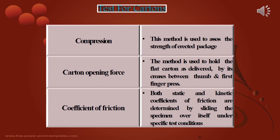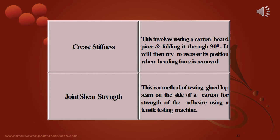Tests for cotton include a compression test to assess the strength of an erected package, and a cotton opening force test where flat cotton is held by its creases between the thumb and first finger. The coefficient of friction test determines both static and kinetic coefficients by sliding the specimen over itself under specific conditions. The crease stiffness test involves folding a cotton board piece to 90 degrees; it then tries to recover when the bending force is removed. Joint shear strength tests the glued lap seam on the side of cotton for adhesive strength using a tensile testing machine.